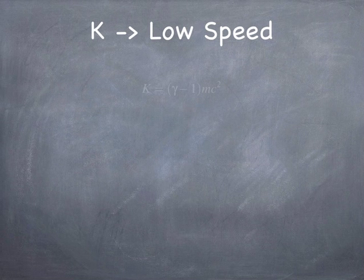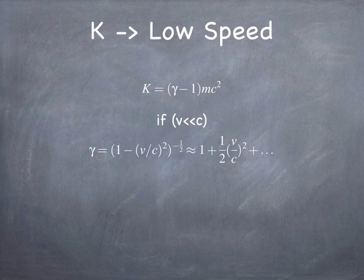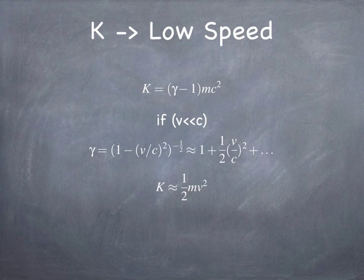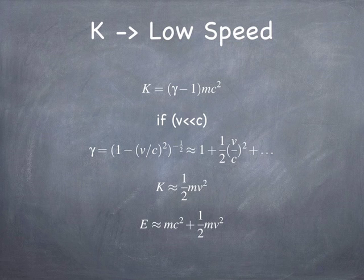As the speed becomes low, you can use a binomial expansion of gamma. Gamma turns out to be 1 plus one-half of (v/c)² in the low speed limit. In that limit, you can see that the kinetic energy is just one-half mv². If you've taken physics before, this is probably the definition of kinetic energy you used. This is perfectly fine as long as the speed doesn't get close to the speed of light. The total energy is then the rest energy plus one-half mv².